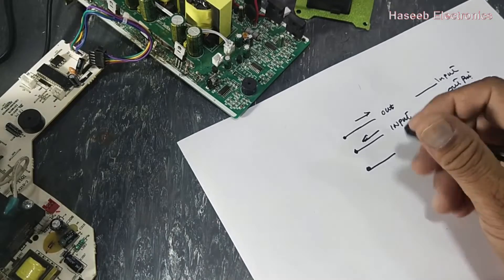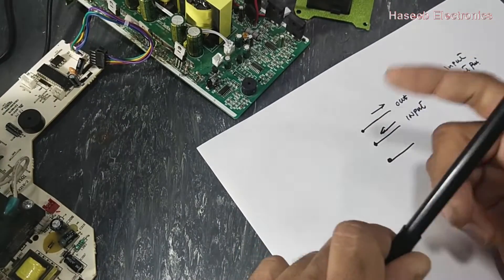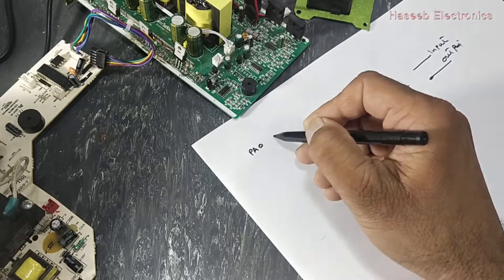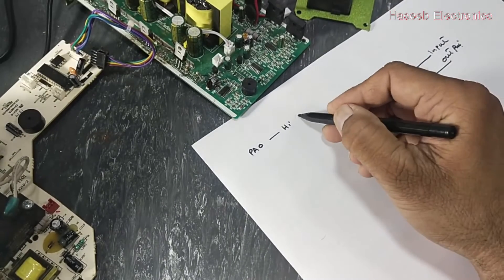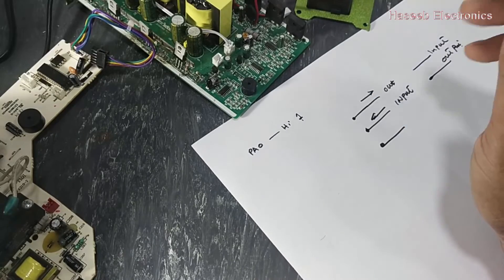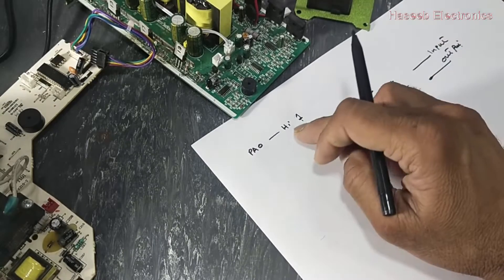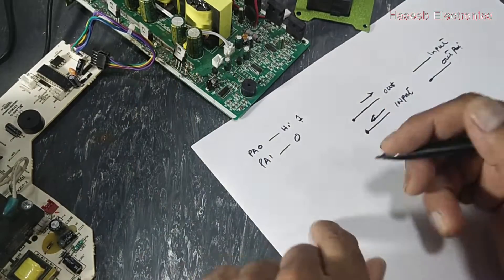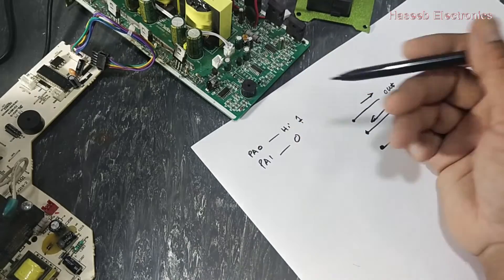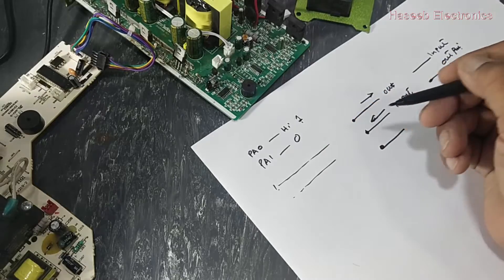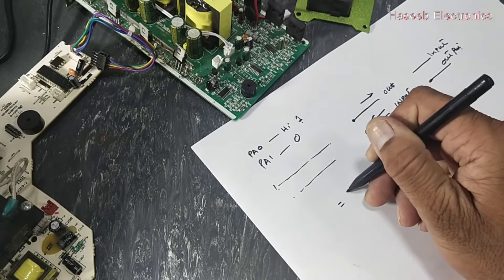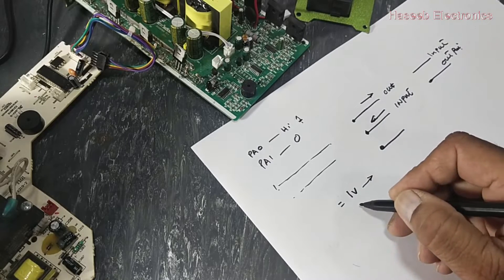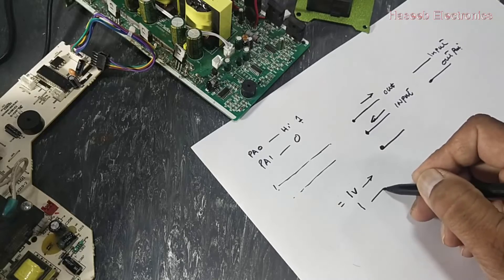When we put software — the source code, the instruction set — what is the software? Software is the instruction set. For example, we say PA0 equals high, or 1, so it is an output pin; if it is 0 it is an input pin. It has a complete coding. When we write the command in the computer, we write instructions — for example, measure voltage at pin number one, measure voltage at pin number two. If this voltage is equal to one volt, what is the next function? If the voltage is less than one volt, what will you do?